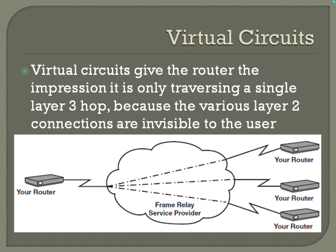Virtual circuits give the router the impression it is only traversing a single layer three hop, because the various layer two connections are not visible to the user. In this example, you have a network with four routers. One of them has a Frame Relay connection with PVCs to each of the other individual routers. If you were to do a traceroute, you're only going to see it traverse a single hop, maybe two, depending on how the gateways are set up. Frame Relay is a layer two technology, so a lot of what's happening on the service provider's end is effectively invisible to you.